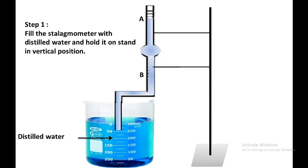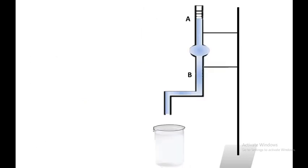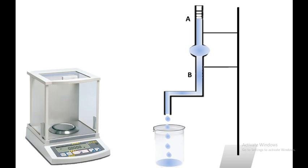Hold the stalagmometer in a vertical position and hold the liquid using your thumb, then release the thumb. Drops of water will form at the bottom of the stalagmometer. Collect a fixed number of drops — for example, 20 drops of water — in a dry and clean glass beaker. Measure the weight of the collected drops; it is showing 25.287 grams.